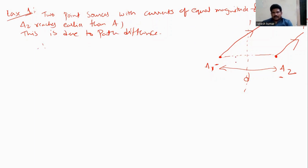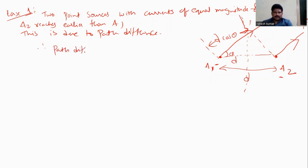What is the path difference? The difference involves d. If we draw it here, what is the extra distance? a1 has to travel an extra distance. The extra distance is d cosθ. Therefore the path difference — the extra distance traveled by a1 — is d cosθ.